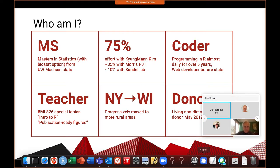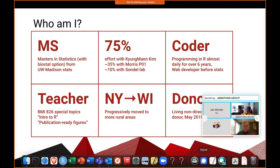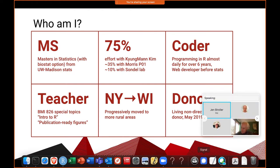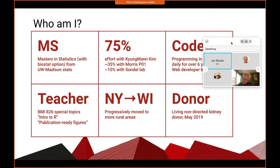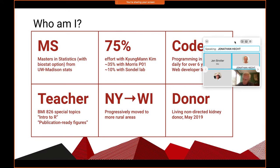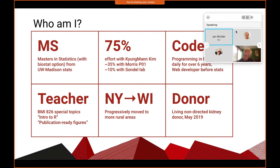Even the publication-ready figures course is in R, so if you're using R, that's probably good to take as a researcher. A lot of my students are definitely researchers. I'm also a transplant in two different ways — I grew up in New York City and moved to Wisconsin and progressively to more rural areas, and I am a living non-directed kidney donor. That fun fact isn't necessarily relevant to my knowledge about tumor growth, but I like to share it because that's what sparked me to donate my kidney.